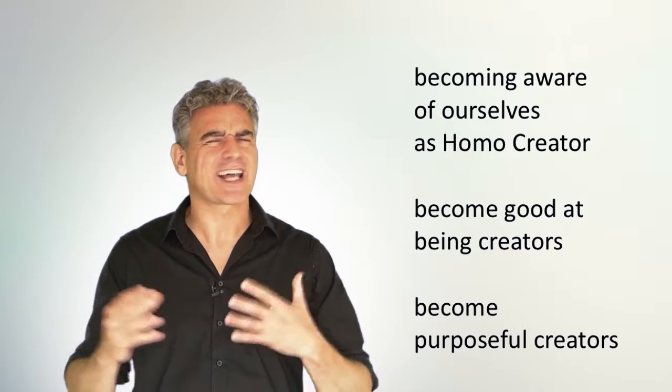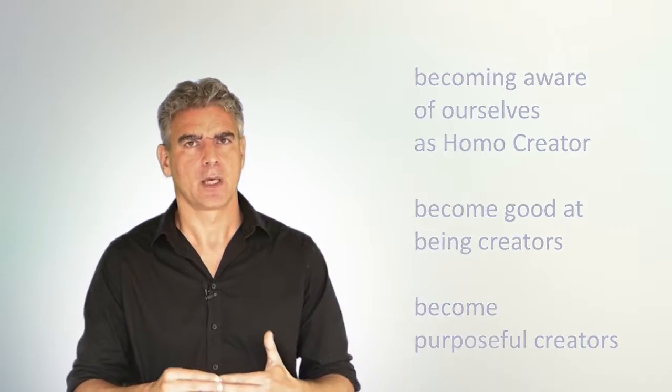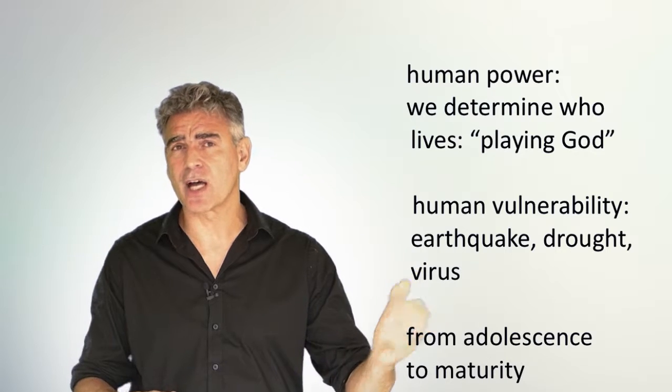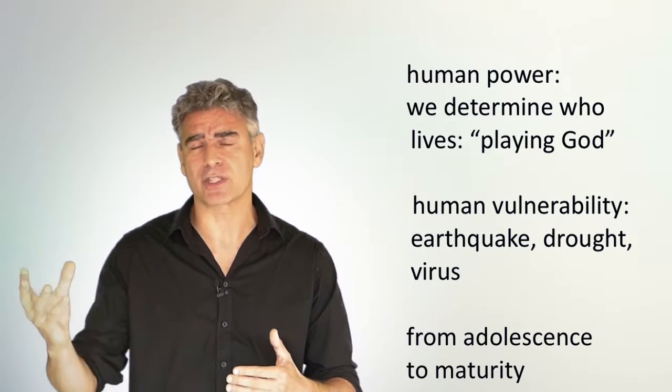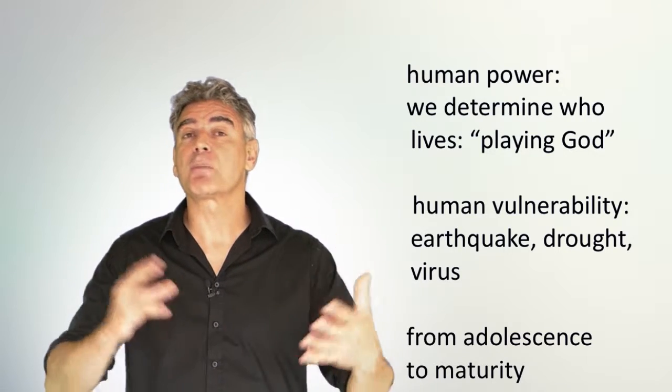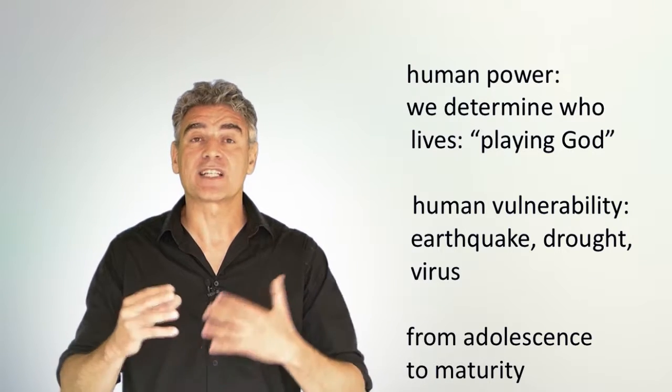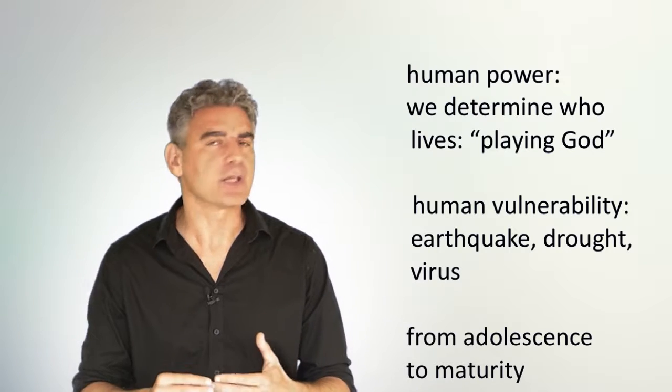Because at the moment you could say that we're really like an adolescent. Human beings are very powerful, and at the same time they're still very vulnerable. So we're powerful because we decide who lives. We can decide which animals survive and which animals don't survive. We want to save the whales, but we don't want to save certain viruses because they kill us. So we decide. We decide what the kind of temperature on the planet is going to be through our actions or our non-actions. We can decide the direction in which cloning or gene therapy is going to happen in the future.